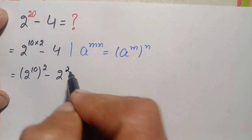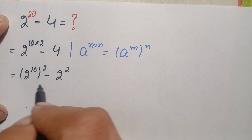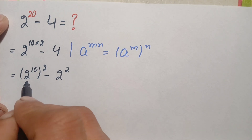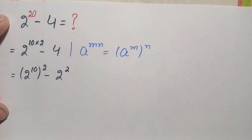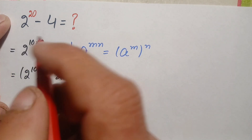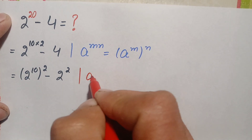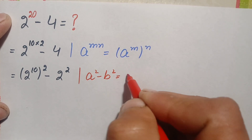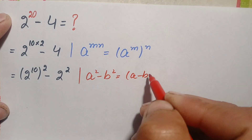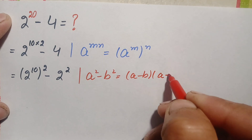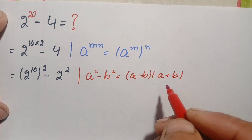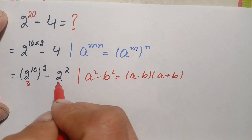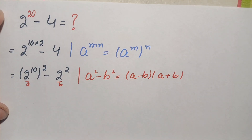Now look at both the terms — both terms are in square form. So here we will use the algebraic identity a squared minus b squared, which is equal to a minus b times a plus b. So here our a is 2 raised to power 10 and our b is 2.